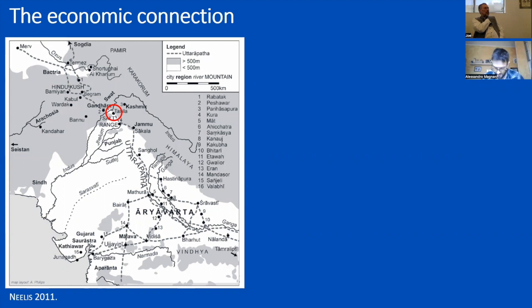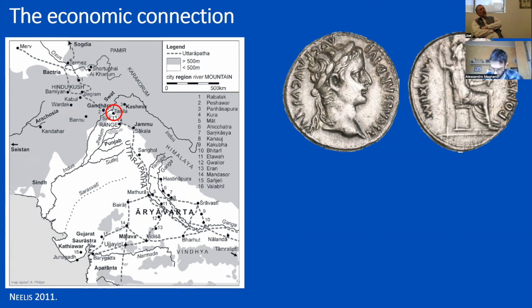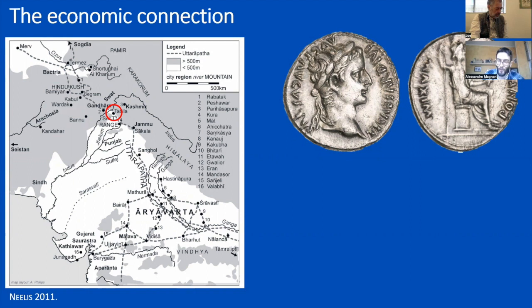I think, not surprisingly, that they took inspiration from the most attested Roman coin found there, which is this denarius of Tiberius, amounting to more than 3,000 specimens in India. During a period of great debasement of precious metal in the coinage of Gandhara, recalling one of the most well-known coins on the market could be interpreted as a guarantee by merchants, and that could legitimize Kujula's coin on the markets. This is my hypothesis.